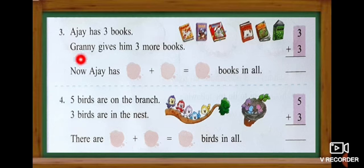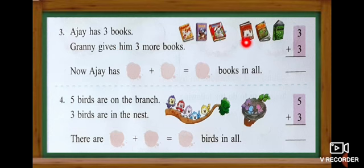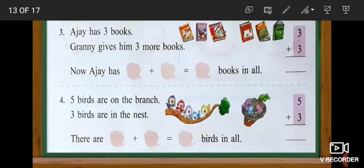Number three. Ajay has three books and Granny gives him three more books. First we write number three, and then three more — so three plus three. When we add three plus three: one, two, three, four, five, six. The answer is six.